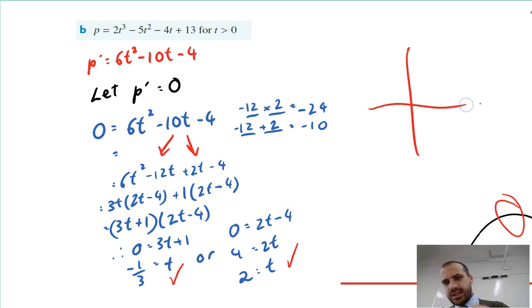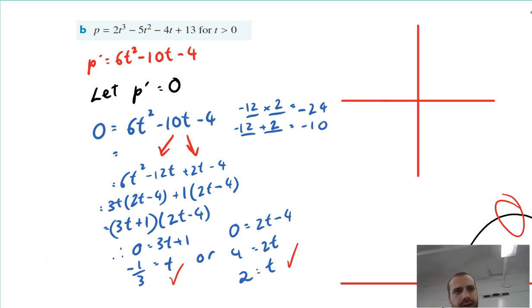I've got a Cartesian plane, something like that. Let's make it a little stationary point. Now I can say that at t equals negative one third and at t equals two, I'm going to have a stationary point.